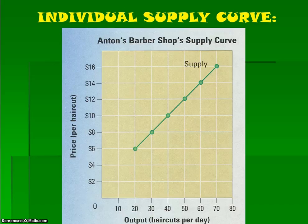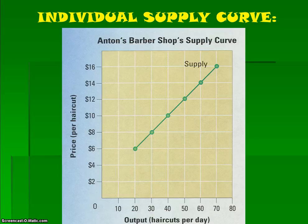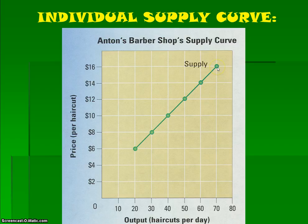This is an example of a supply curve — this is an individual supply curve, Anton's Barbershop Supply Curve. If this was a market supply curve, it would be the supply curve for all barbershops in an area, but this is just one specific producer. The only way we get this information is by asking Anton to look at his cost of production and let us know, at each given price per haircut, how many he would be able to do each day out of a shop. As the price of a haircut increases, the quantity supplied increases as we move up this curve.